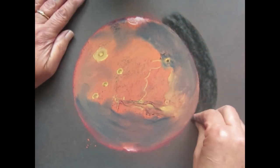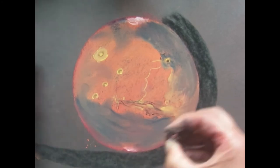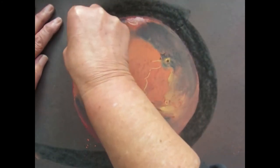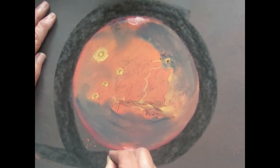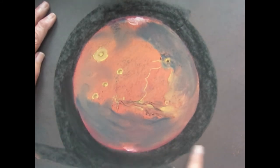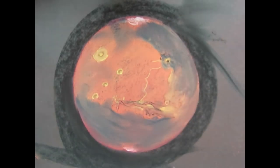Its year is 687 Earth days long. I'm going to finish this Mars drawing by edging the planet with black pastel, the blackness of space, if you like, where it exists orbiting the Sun with its two moons, Phobos and Deimos.